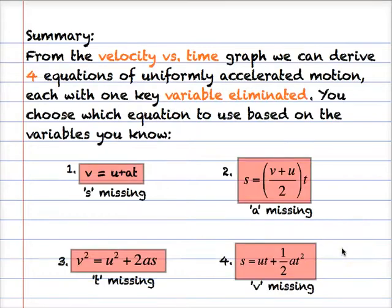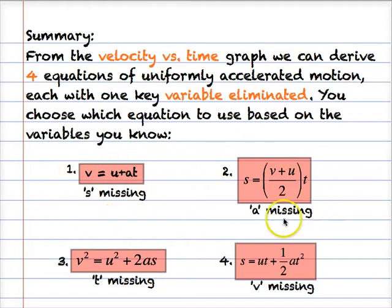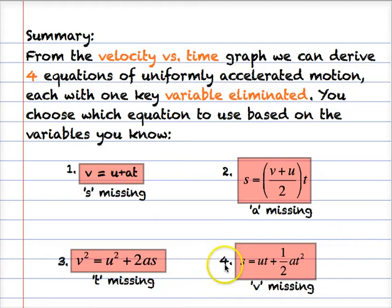In summary, from the velocity-time graph alone we can derive four equations of uniformly accelerated motion, each one with one key variable eliminated. You simply choose which equation to use based on the variables that you know. Equation 1: displacement s is missing. Equation 2: acceleration a is missing. Equation 3: time t is missing. Equation 4: final velocity v is missing.